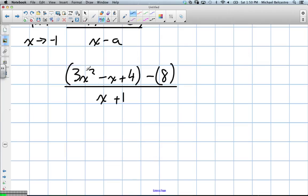Great. So we're going to simplify what's on top, and technically I should be still writing the limit as x approaches negative 1. Positive 4 minus 8 is going to give us negative 4. So on top we'll have 3x squared minus x minus 4, all divided by x plus 1.